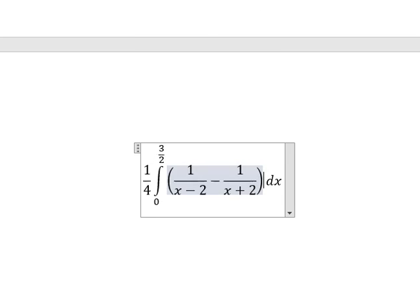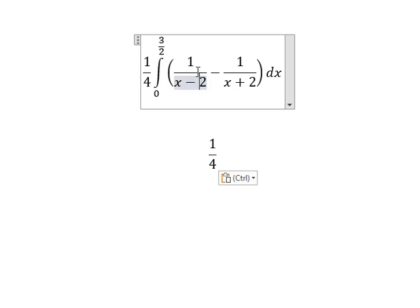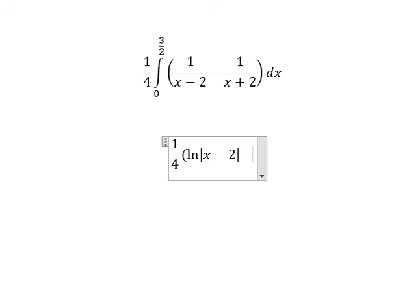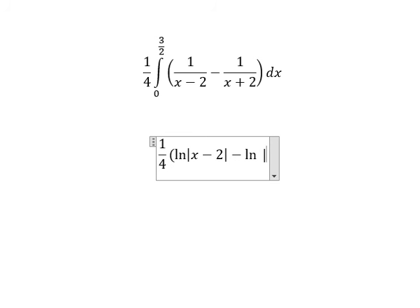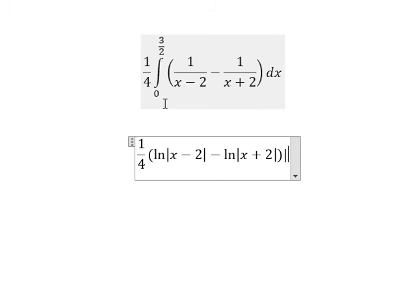And now we have the final answer. The integration of 1 over (x minus 2) gives ln of the absolute value of (x minus 2). The integration of 1 over (x plus 2) gives ln of the absolute value of (x plus 2). I will put the bounds from 0 to 3 over 2.